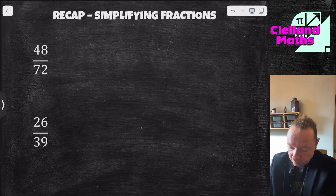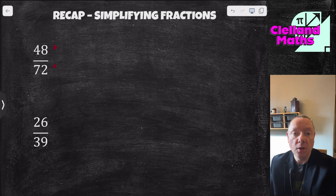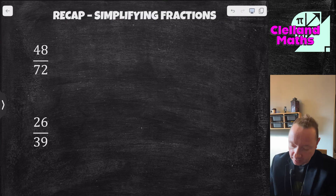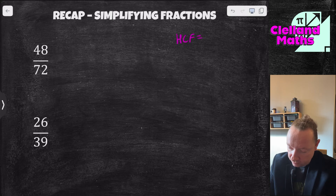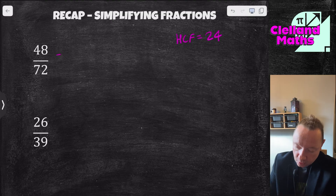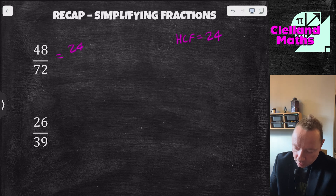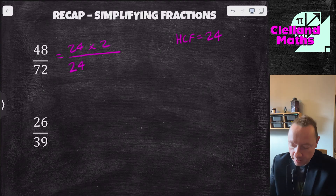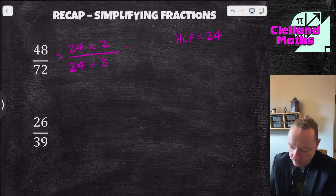When you're simplifying fractions, if you can find a number that goes into both of them, you can divide by that number and simplify. You want to find the highest number. So looking at this first one, the biggest number that goes into both is 24. Taking 24 as a common factor, the top is 24 times 2, which is 48, and 24 times 3, which is 72. The 24s cancel each other out, leaving just 2 thirds.